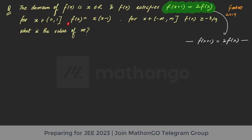We are given that for x in [0, 1], f(x) = x·(x−1), which is a simple quadratic we can write as x²−x. The graph has zeros at x = 0 and x = 1, and importantly this function definition is only given on [0, 1].